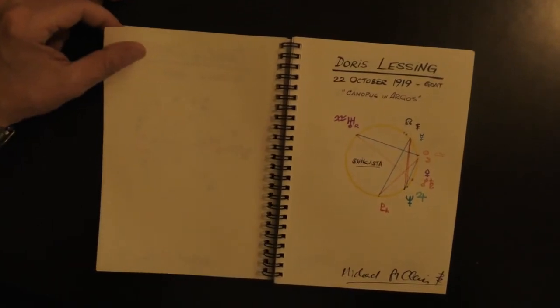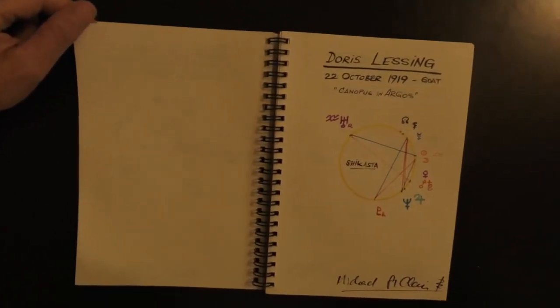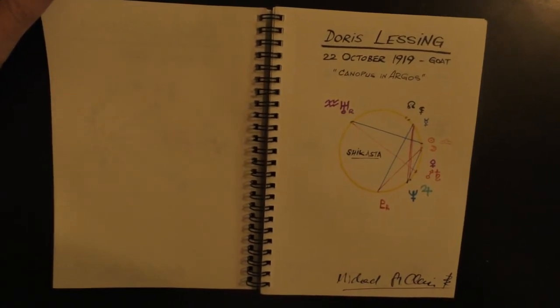Doris Lessing, Libra, Canopus in Argos, Shirochi Kastav.